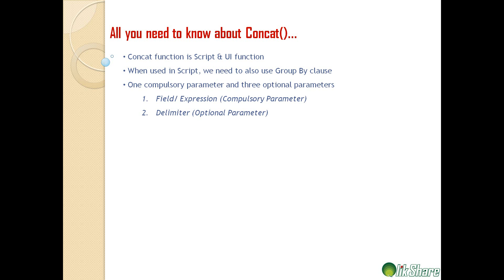The delimiter can be a comma, a pipe, a special character, or even a word. The second optional parameter is the sort weight, which determines how you want to sort the string. If you have ten distinct field values and want them sorted in a particular order, you can use sort weight — it can be either ascending or descending order. The most important optional parameter is the distinct qualifier, which lets you specify whether you want a distinct or non-distinct list.